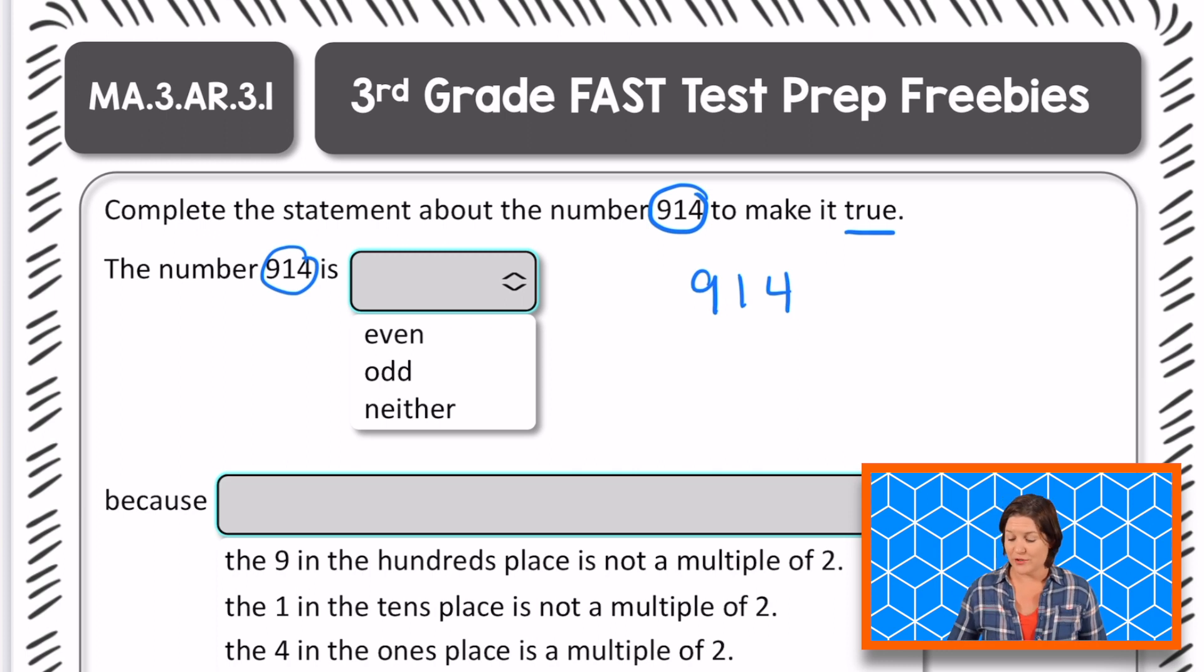The ones place, right? The ones place right there. So to determine if this number is even, we look at the ones place. The digit four is in the ones place.